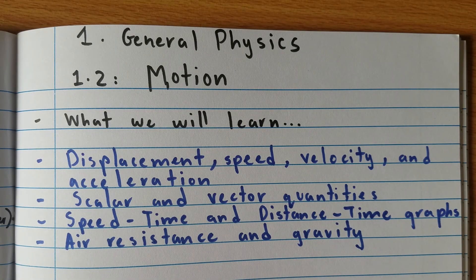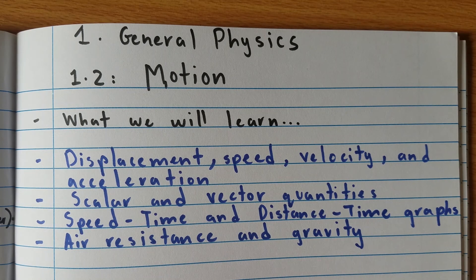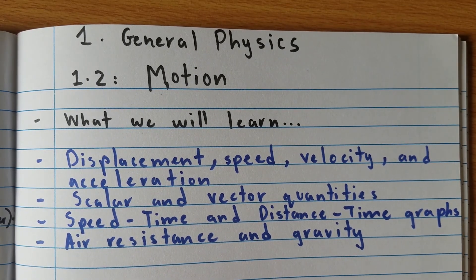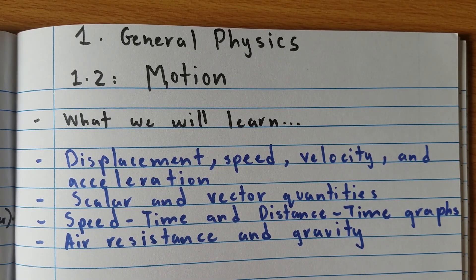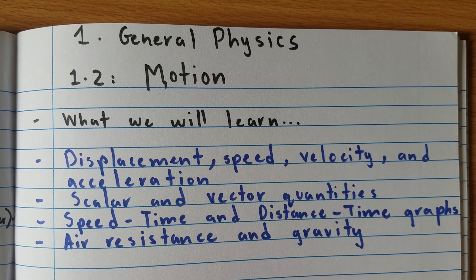Welcome to another IGCSE physics video. Today we're discussing section 2 of general physics, which is motion. We're going to learn about displacement, speed, velocity, and acceleration. We're also going to learn about scalar and vector quantities, speed-time and distance graphs, and air resistance and gravity.